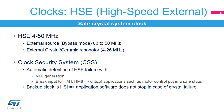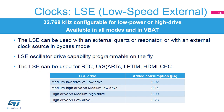If an HSE failure is detected, the clock security system allows the system to be put in a safe state by generating break events to critical applications, such as motor control. The 32.768 kHz low-speed external oscillator can be used with external quartz or resonator, or with an external clock source in bypass mode. The oscillator driving capability is programmable — four modes are available from ultra-low-power mode to high-driving mode. The LSE can be used to clock the RTC, the low-power timer, the HDMI-CEC interface, and USART peripherals.